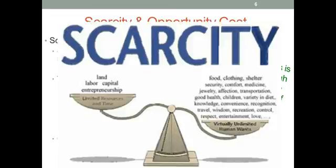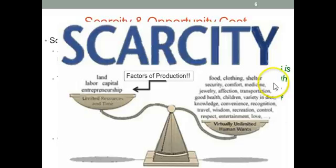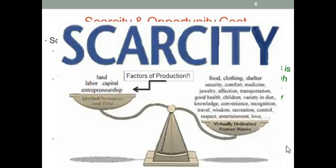Scarcity. There's a graph here for you. On the left-hand side, you see land, labor, capital, and entrepreneurship — those are factors of production. We're going to learn about factors of production in a lot more detail later, but those are the resources we have to make other stuff and to function. And then on the right-hand side, you see all the wants that we have — the wants and needs — and they're virtually unlimited. So we have to use these things on the left to produce all of these things on the right. So after a while, stuff's going to run out.